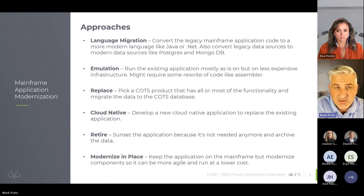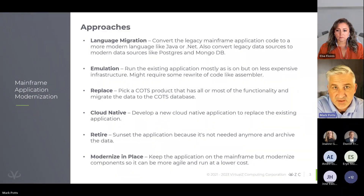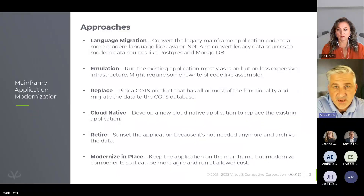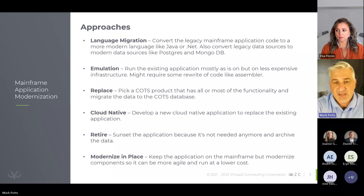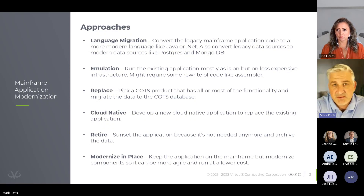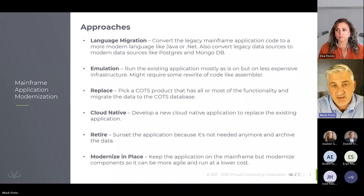We're also seeing clients rewrite or develop new cloud-native applications from scratch, using the capabilities of AWS, Google, and Azure to build new applications at speed with the latest and greatest tools. Retire — we are seeing a good amount of applications get retired that just aren't being used as much anymore. But the last approach is in-place modernization, where clients want to achieve business agility, lower costs, and free up talent by modernizing in place — whether that's better DevOps or providing better access to mainframe data for analytics and AI in the cloud.